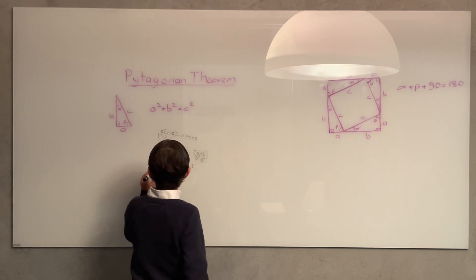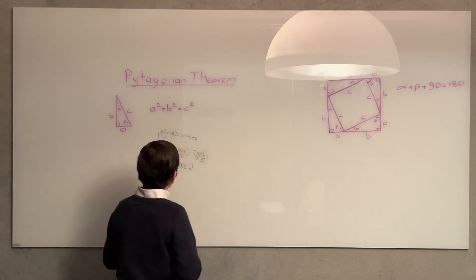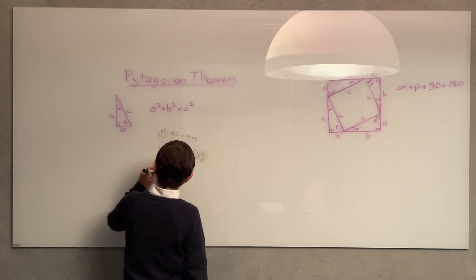Now, we can still simplify this because ba is the same as ab, so now we have a² + b² + 2ab.